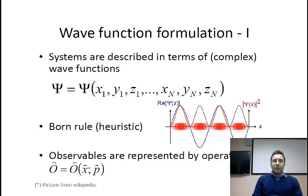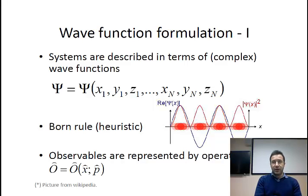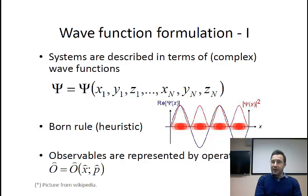In the Schrödinger formulation, every quantum system and every experimental setting are described by means of complex wave functions. You may imagine these wave functions as complex functions which are defined on the configuration space — the space of spatial coordinates of all particles involved in the experiment. Even though we can describe a system completely by means of wave functions, one should be careful and not attribute any physical meaning to this function. This is just a mathematical function.